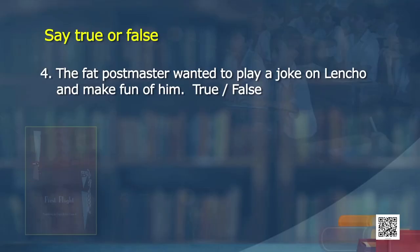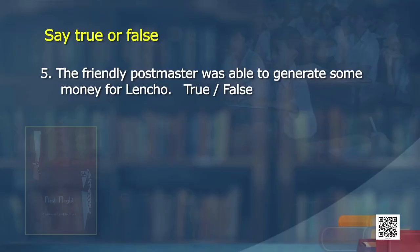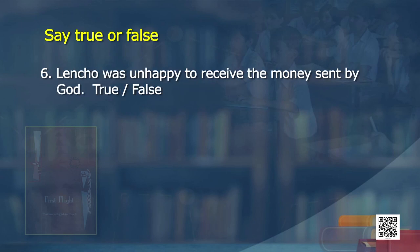The friendly postmaster was able to generate some money for Lencho — true. Lencho was unhappy to receive the money sent by God — true. Why? Because he was expecting 100 pesos and instead got only 70 pesos. Now we have seen the summary and done some questions which will make our learners go back and read.